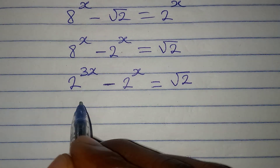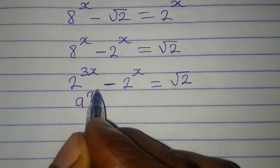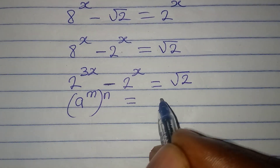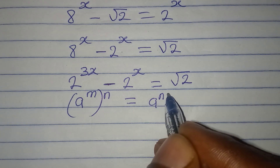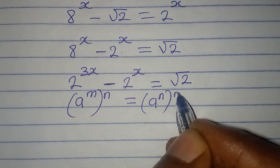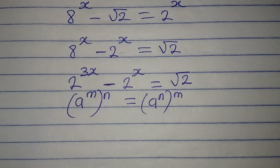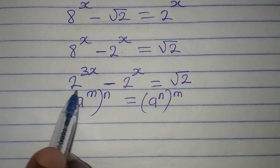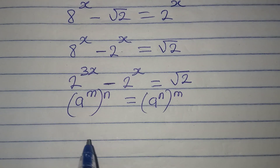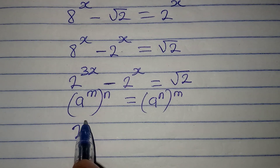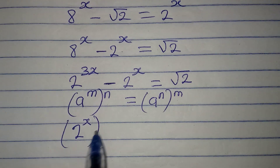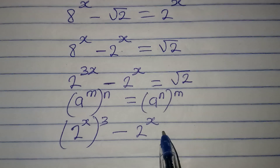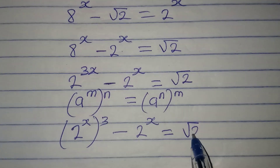Now, if you have a to the power of m to the power of n, this can be written as a to the power of n to the power of m — the order of multiplication doesn't matter. Because of this, I'm going to work on the first term, so I'll have 2 to the power of x and then take the 3 outside, minus 2 to the power of x, and this is equal to square root of 2.